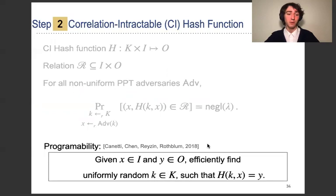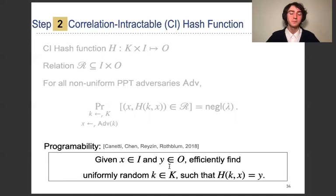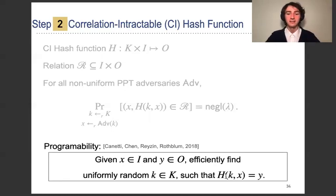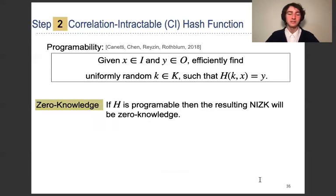We talked about soundness. Now I also want to mention programmability. Programmability means that given an input x and an output y, we should be able to efficiently find a key that is distributed uniformly at random such that x is mapped to y. This helps with zero-knowledge because once we are able to find these keys which map x to y, our simulator for the NIZK will use the simulator for the Sigma protocol to find an accepted transcript, and then find the key that maps the first flow to the second flow.